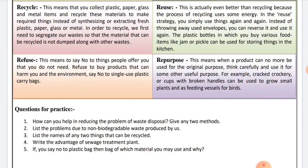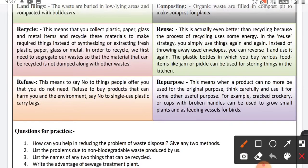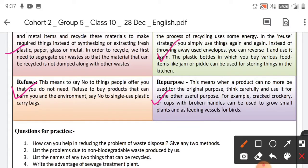Tell us what things you have repurposed through 'best out of waste.' Question 1 asks: How can you help in reducing the problem of waste disposal? Give any two methods. From the 4 R's — recycle, refuse, repurpose, and reuse — you can pick any two points to write, as the question asks for two methods.